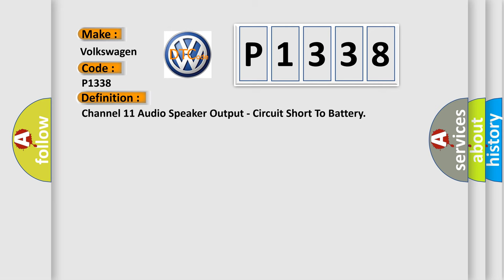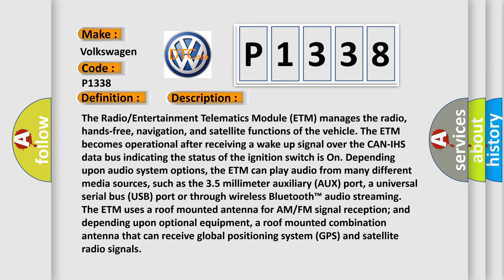The radio entertainment telematics module (ETM) manages the radio, hands-free, navigation, and satellite functions of the vehicle. The ETM becomes operational after receiving a wake-up signal over the CAN-IHS data bus indicating the ignition switch is on. The ETM can play audio from many different media sources, such as the 3.5mm auxiliary port, a USB port, or through wireless Bluetooth audio streaming. The ETM uses a roof-mounted antenna for AM/FM signal reception and, depending upon optional equipment, a roof-mounted combination antenna that can receive GPS and satellite radio signals.